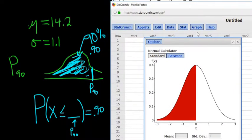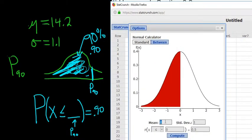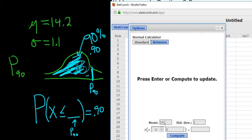Then we enter the mean. The mean in this problem was 14.2. The standard deviation is 1.1. And we're given the area, so that goes in the second box. P90 means 90% is to the left, so we pick less than. When we click Compute, the answer should appear in the first box.